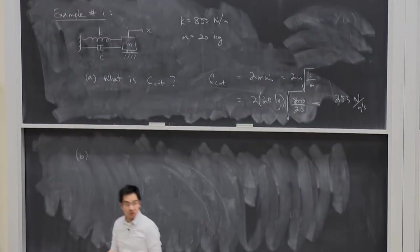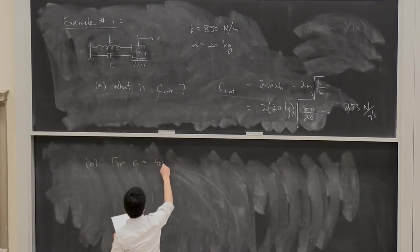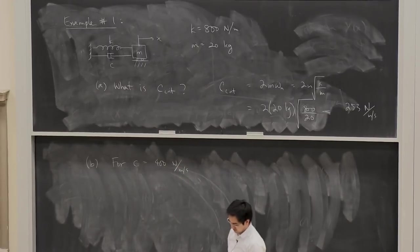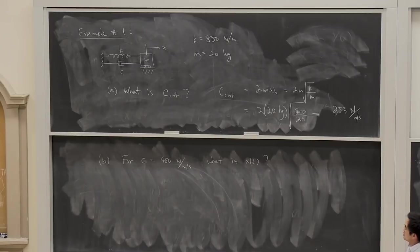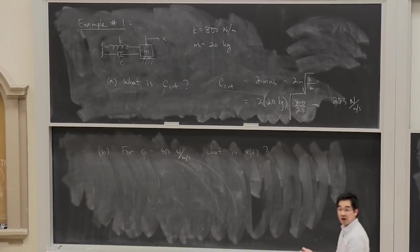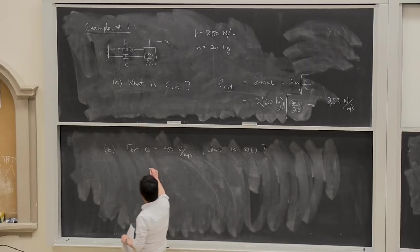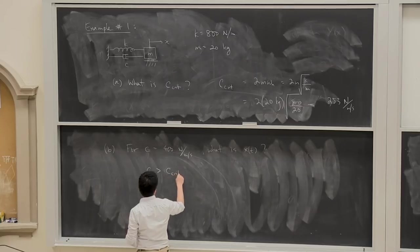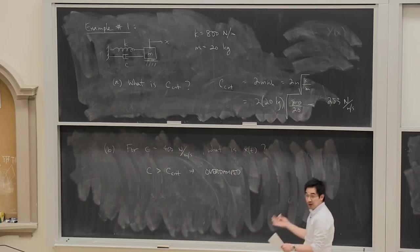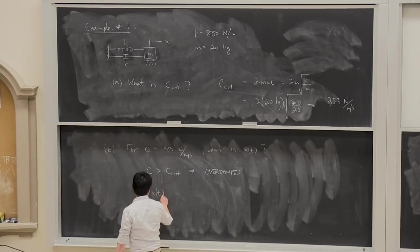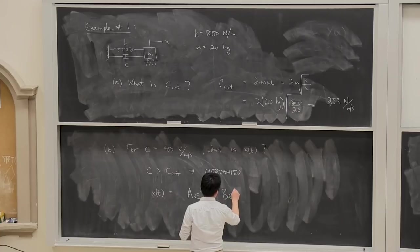The next question is, once you know that, what if you're given a c? So you're told for c equal to 400 N/m/s, what is x(t)? The whole point of calculating c_critical is so that you can figure out which of the three cases you're actually seeing. Are you overdamped, critically damped, or underdamped?